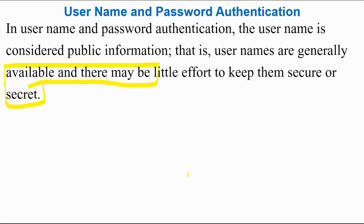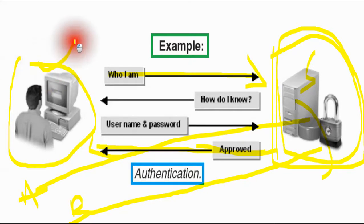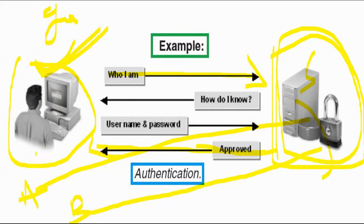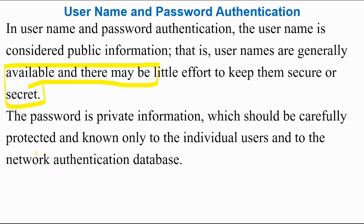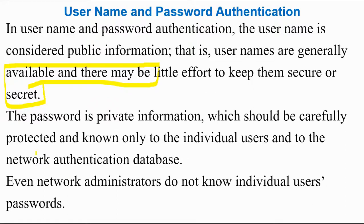The meaning is simple: username is public information — just like Google, everybody knows it. But if you have a Gmail ID, only if you know the password can you log in. That password is your private information, top secret — only you will know what your password is. That is the difference and the story of username and password authentication: username is public information and password is private, very secure.